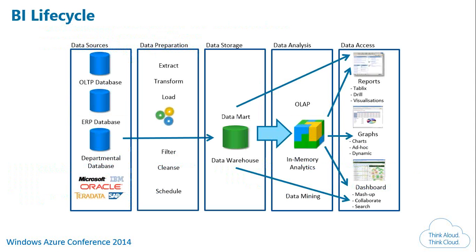In a BI scenario, you have different OLTP systems — ERP, HR databases, finance databases — on various sources: Microsoft, IBM DB2, Oracle, Teradata, SAP, and so on. You run ETL to extract data from source systems, perform transformations such as converting currencies, standardizing dates, and deriving certain codes. For example, gender is always represented as M and F, never as 1 and 0, and then you load the data.